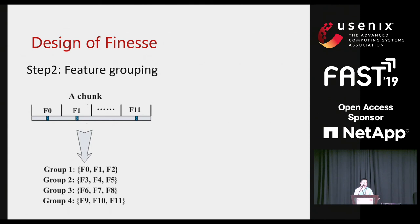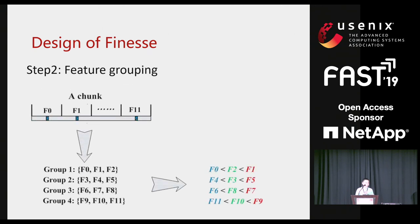Question: If I understand correctly, the number of features in a super feature is related to how many sub-chunks there are in a chunk. Did you experiment with varying that? In this paper, we used 12 sub-chunks in order to achieve a similar compression ratio as the traditional approach. But if we choose more sub-chunks for resemblance detection, I think we can get more sensitive results. The current selection of the number of sub-chunks is good enough to achieve similar results to the traditional approach.